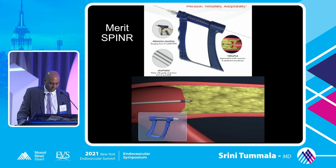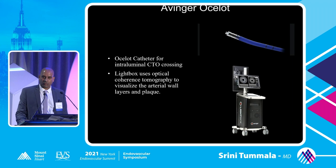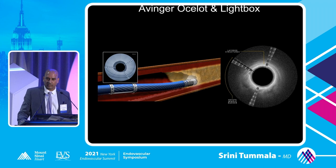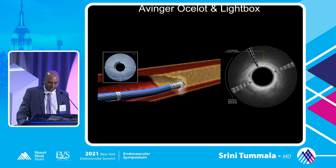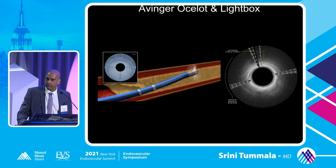The Avenger Ocelot is another device involving capital equipment — a CTO crossing catheter using OCT, or optical coherence tomography, to visualize plaque as well as the layers of the arterial wall. Because you can see where you're going, you're able to snake through the CTO to gain access, and it commonly provides intraluminal crossing. We have this device and have used it with success many times.